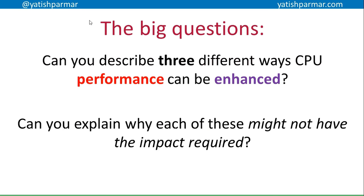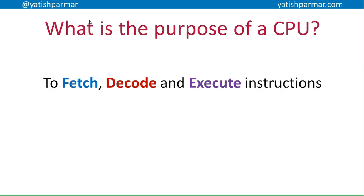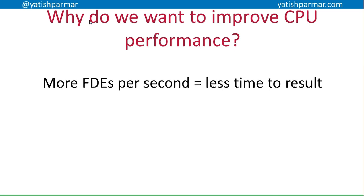Basically, what we're looking at are three different ways CPU performance can be enhanced, and you need to also be able to explain why each of these might not have the impact that is required. First of all, we're going to kick off with what is the purpose of a CPU. The key definition: the purpose of a CPU is to fetch, decode, and execute instructions — nothing else.